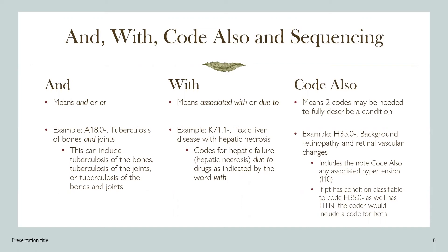When referencing the tabular list to verify code selection, coders will encounter the term and, which should be interpreted to mean and or or. For example, code A18.0, tuberculosis of bones and joints, can include tuberculosis of the bones, tuberculosis of the joints, or tuberculosis of the bones and joints, as indicated by the and in the code description. When the term with appears in the tabular, it should be interpreted to mean associated with or due to, and presumes a causal relationship between the two conditions. For example, K71.1, toxic liver disease with hepatic necrosis, also codes for hepatic failure due to drugs, as indicated by the word with.